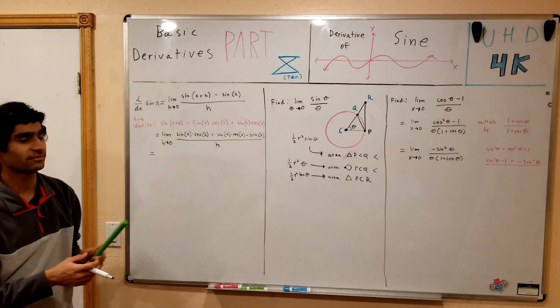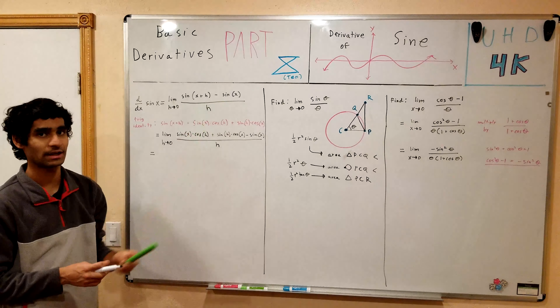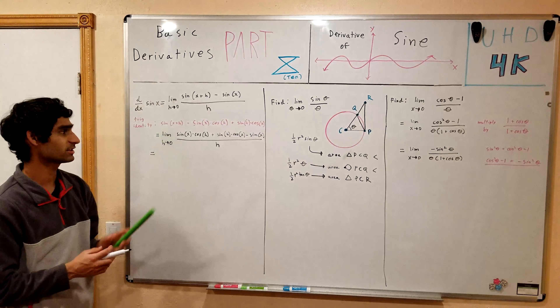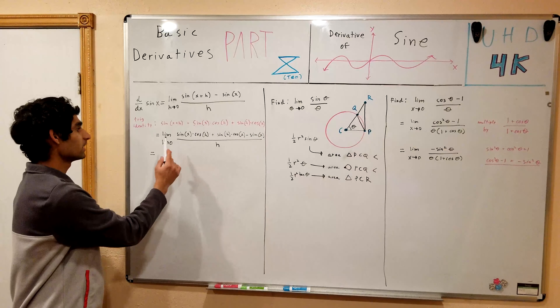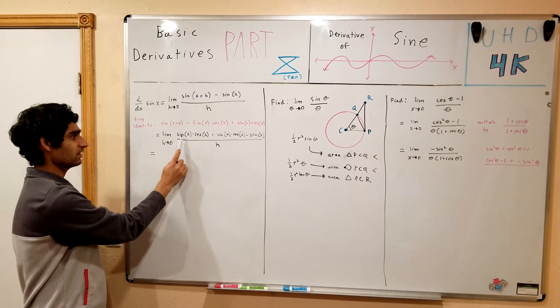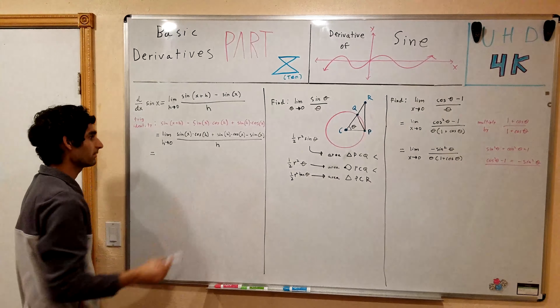Over here we have the limit definition of the derivative. The derivative with respect to x of sine of x is equal to the limit as h goes to 0 of sine of x plus h minus sine of x divided by h. We have a special trig identity where sine of x plus h equals sine x times cosine h plus sine h times cosine x. That's a trigonometric identity and we're going to apply it to get: the limit as h approaches 0 of sine x cosine h plus sine h times cosine x minus sine of x, all divided by h.